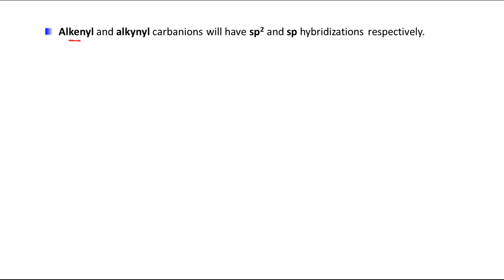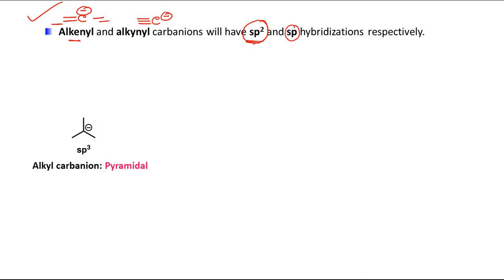What about alkenyl and alkynyl carbanions? For an alkenyl carbanion, the negative charge is on a carbon that is already part of a C=C double bond. For an alkynyl carbanion, it is part of a triple bond with only one substituent. Their hybridizations are sp2 and sp respectively — alkenyl is sp2, alkynyl is sp.